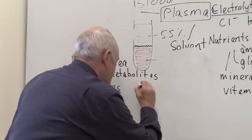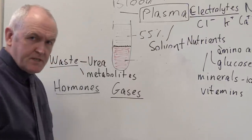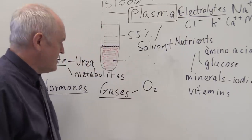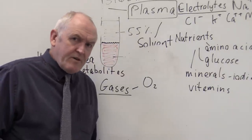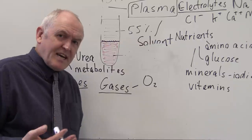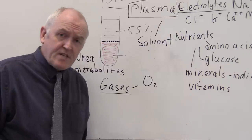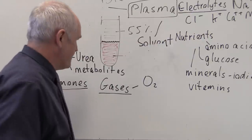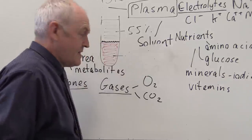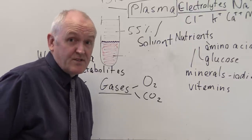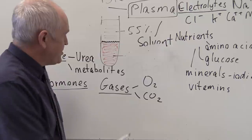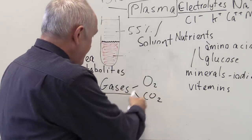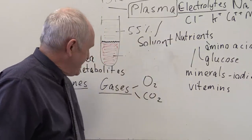There are also gases transported in the plasma. There is some oxygen — maybe one percent of the oxygen carried in the blood is transported in solution in the plasma. About 98.5 to 99% is transported in association with hemoglobin in the erythrocytes as oxyhemoglobin. There is also carbon dioxide in solution in the blood, along with bicarbonate ions and small amounts of carbonic acid. Oxygen travels from the lungs to the tissues, while carbon dioxide is carried from the tissues back to the lungs, with some also carried in the red cells.